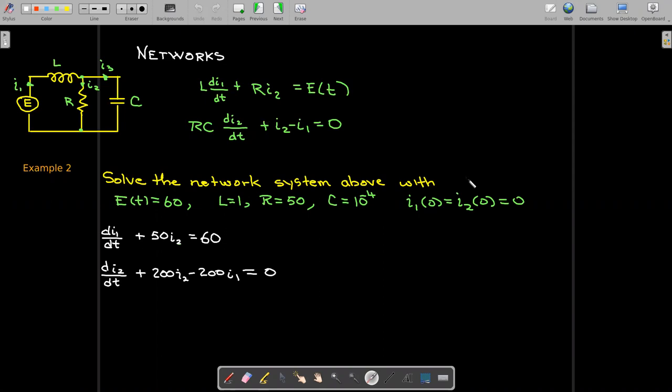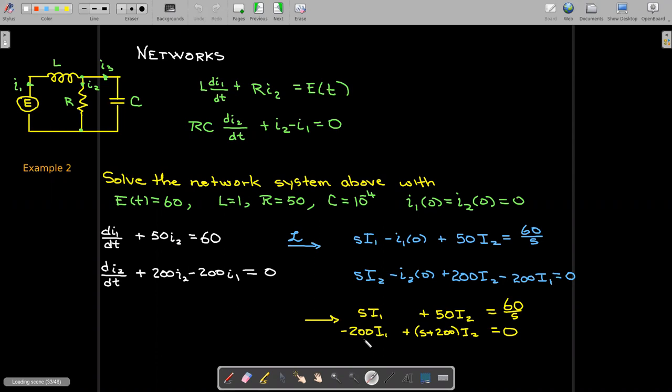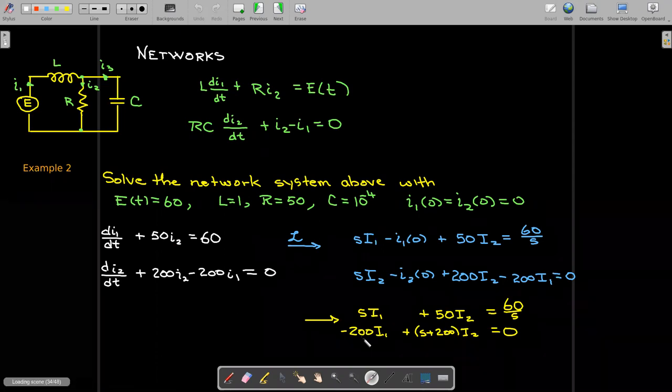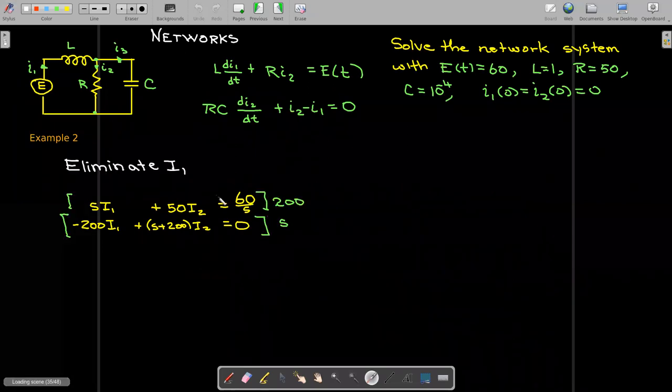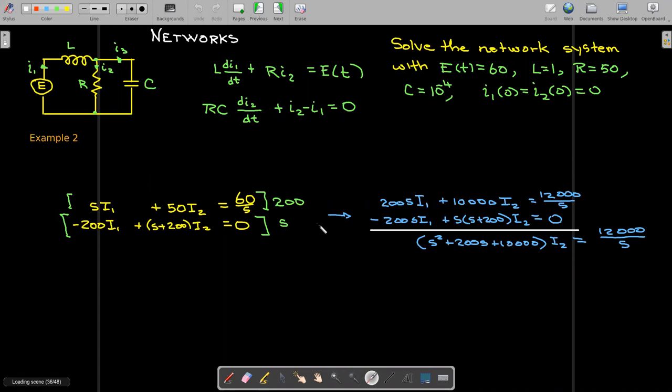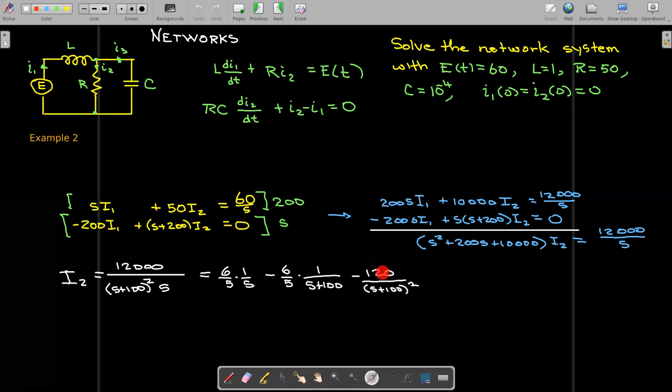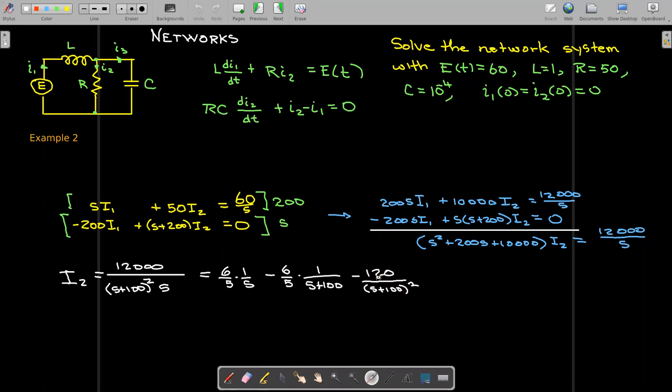So this is a first order differential equation. We can take the Laplace transform. We'll use uppercase I to be the Laplace transform of the lowercase i's. And again we get a system of equations. And the only thing that's different here is we'll use elimination first to find I2. Now here we've got something interesting going on. We can use the partial fraction decomposition for the inverse Laplace transform. Straightforward with 1 over s. Also 1 over s plus 100. But what about the 1 over s plus 100 squared or the 120 there?